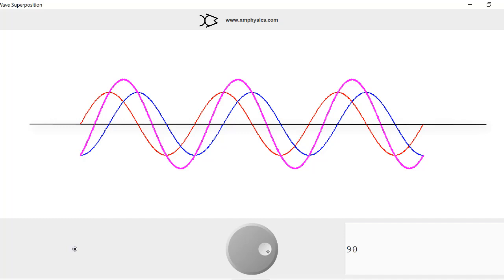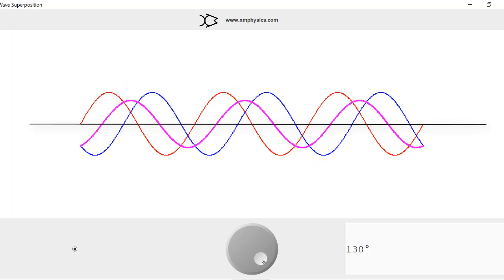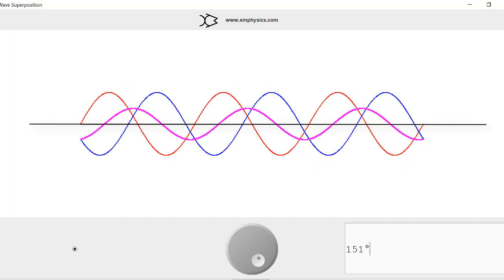Okay, let's increase the phase difference between them to about 150 degrees. So now they are misaligned by 150 degrees. So the resultant is this one here now.